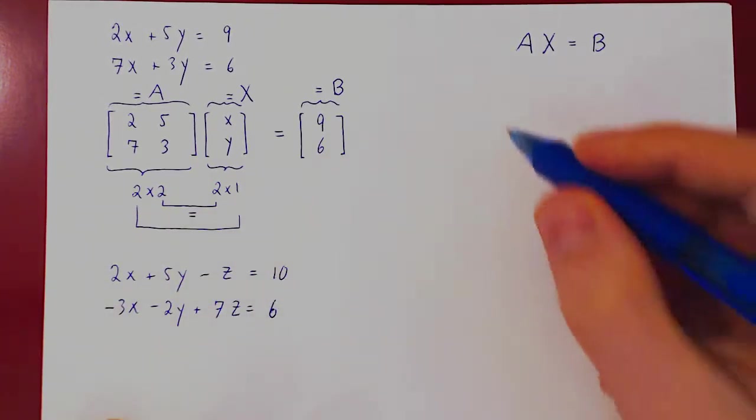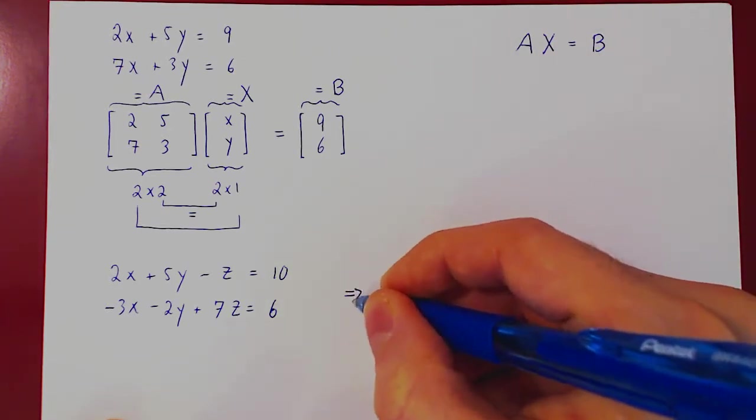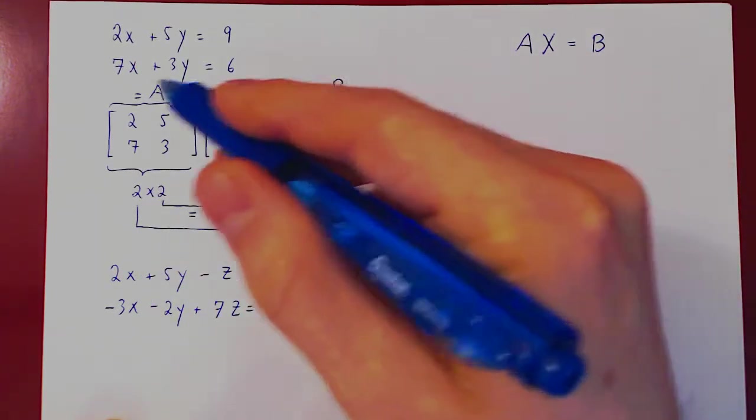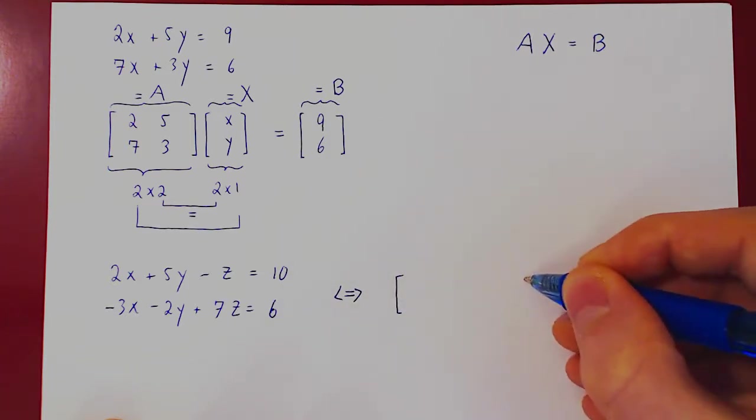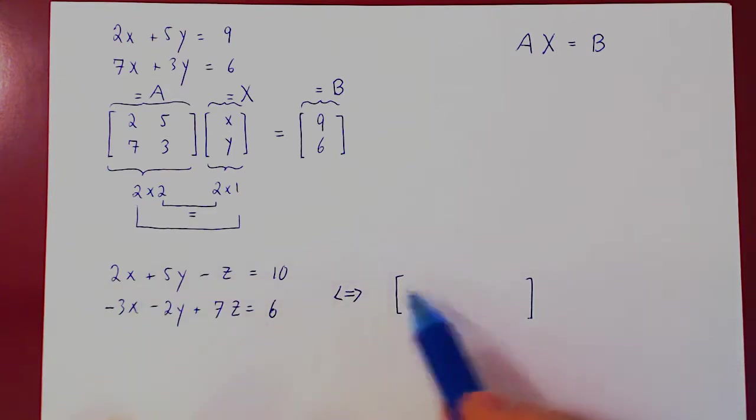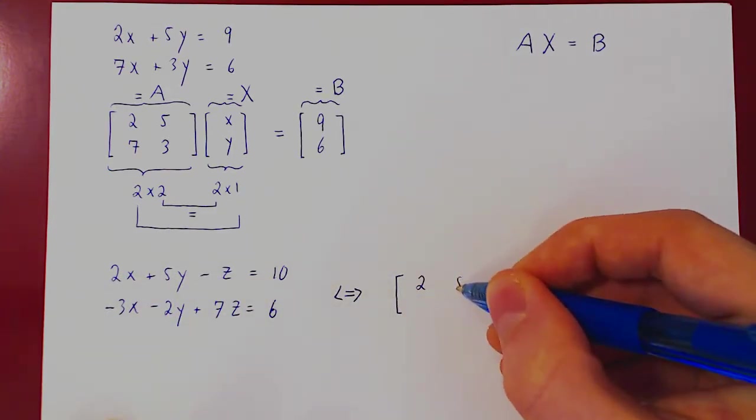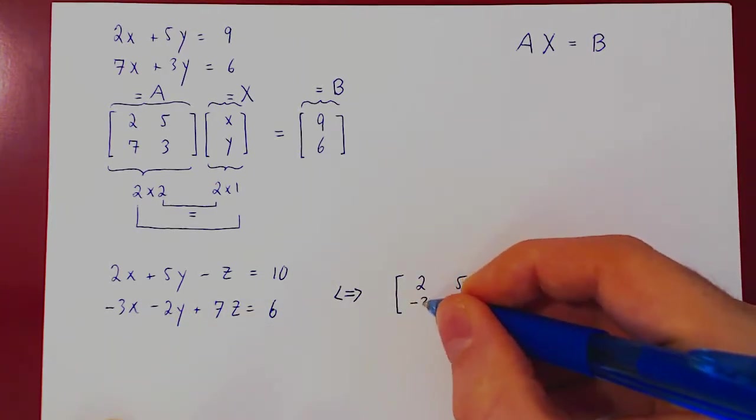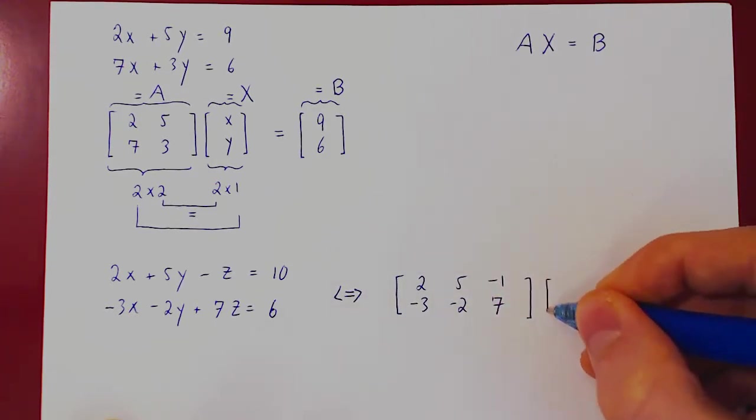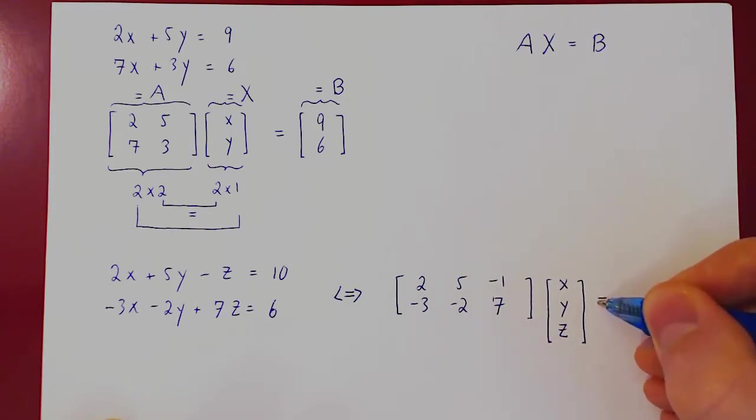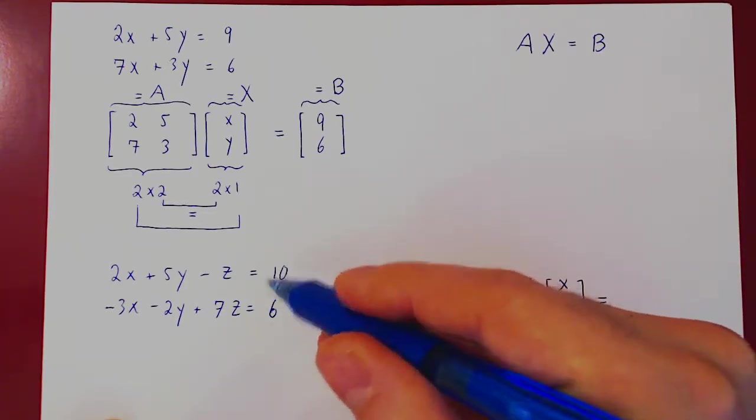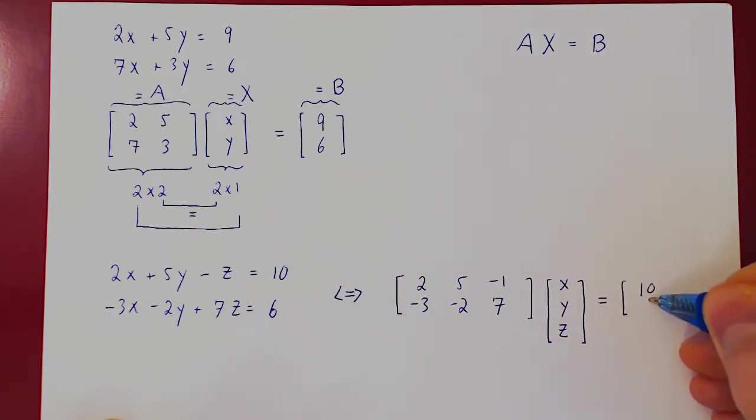We want to rewrite the linear system in an equality of this type. Well, let's use our shortcut and then we'll multiply out the left-hand side in our head to see that the equality of matrices is equivalent to the linear system. So the matrix A is the matrix of coefficients. So the first row of A should be 2, 5, negative 1. The second row should be negative 3, negative 2, 7. Times the column matrix of variables, X, Y, Z, equal the single column matrix, 10, 6. So that's our claim. So this is the matrix A, this is the vector of variables X, and this is the vector or column matrix of constants B.